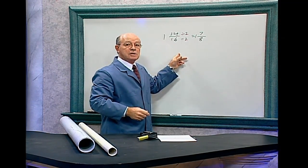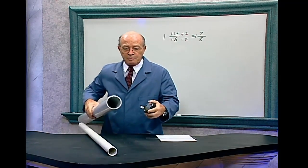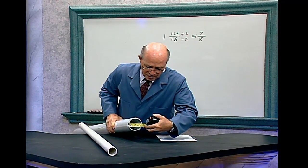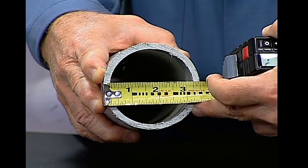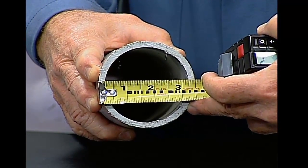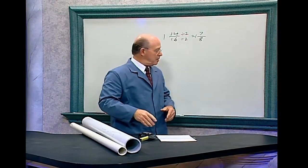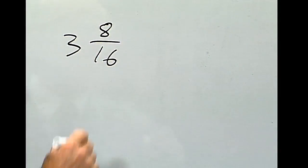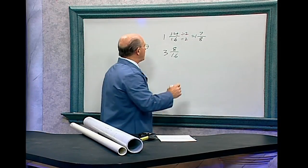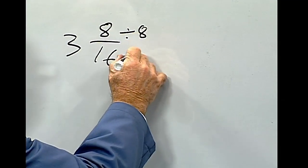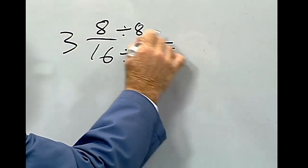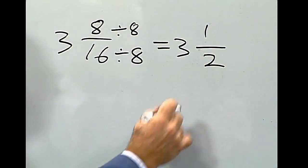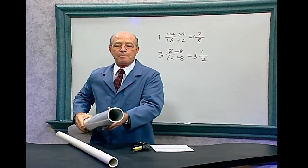Looking at a second piece of PVC pipe, the OD is 3 and 8 sixteenths. You wouldn't go to the store and ask for 3 and 8 sixteenths. Reduce to lowest terms by dividing each side by 8: 8 divided by 8 is 1, and 16 divided by 8 is 2. So the OD of this PVC pipe is 3 and 1 half inches.